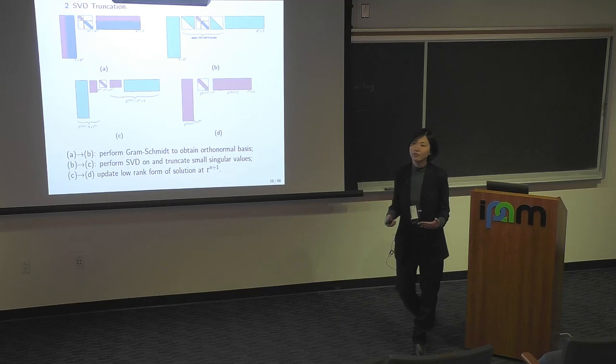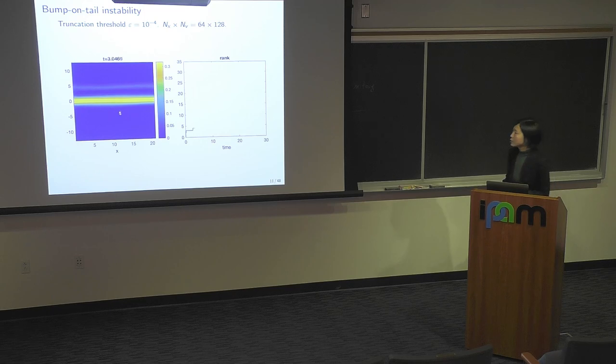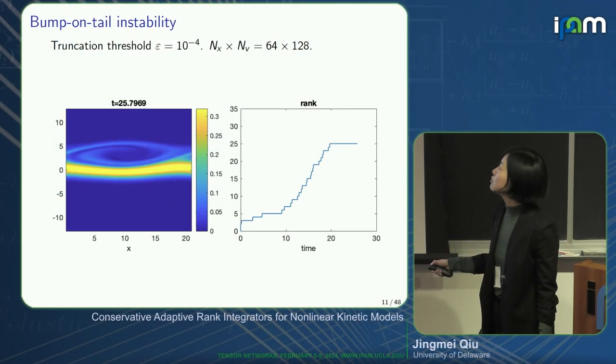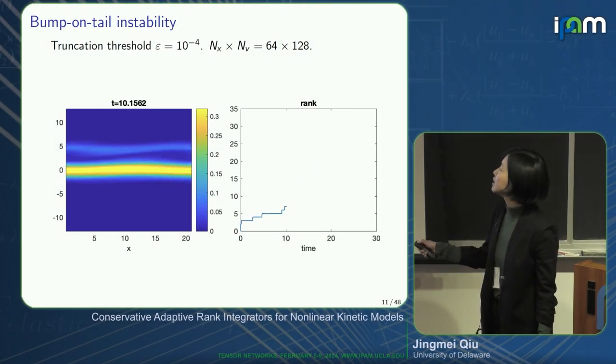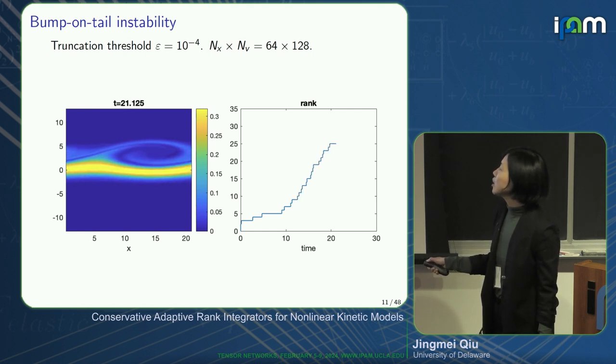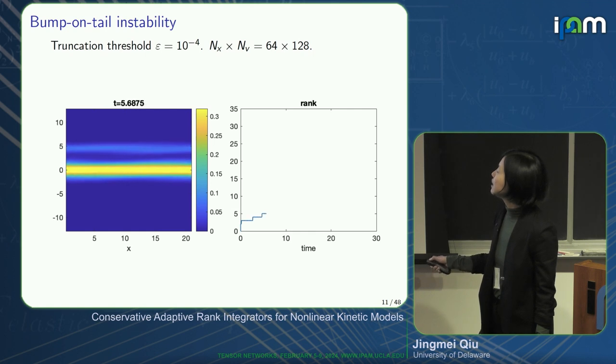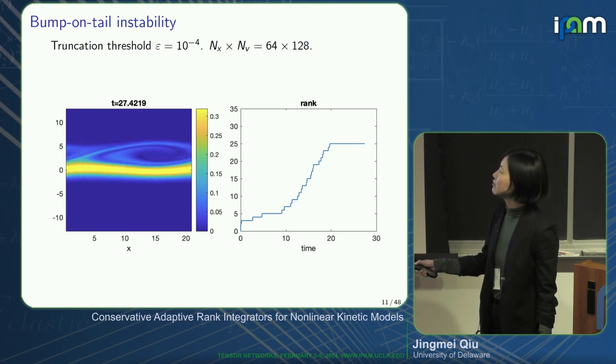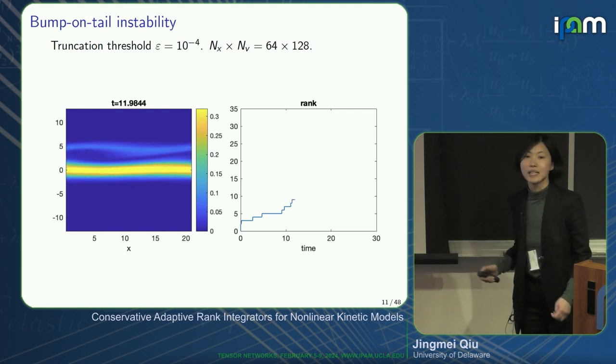This approach can be generalized to high-order multi-step methods or Runge-Kutta methods, and we did that. Our simulation results on the Vlasov equation start from a rank-1 initial condition with SVD truncation threshold 10^{-4}. As time evolves, our method adaptively captures the rank increase of the filamentation structure developing in the solution.